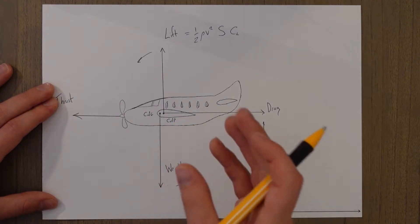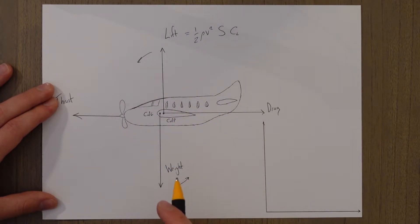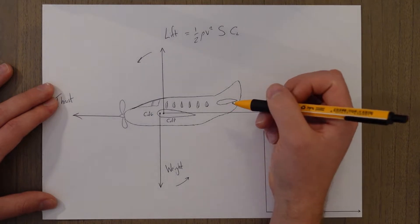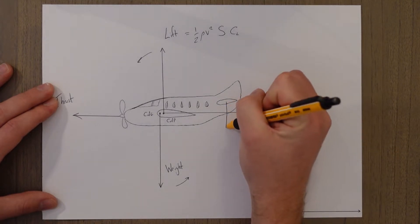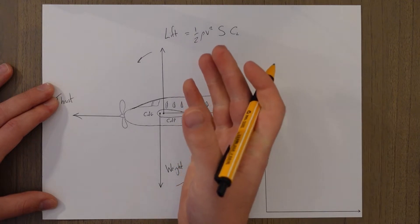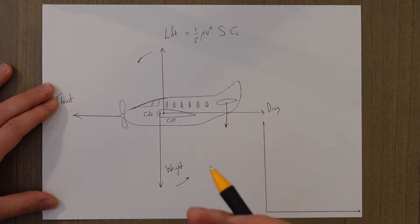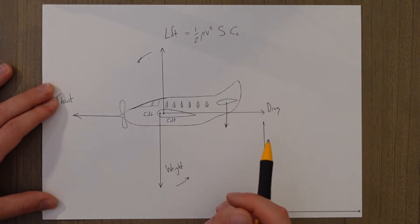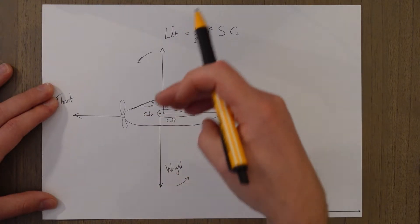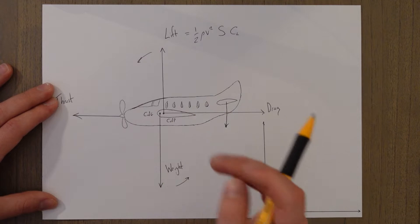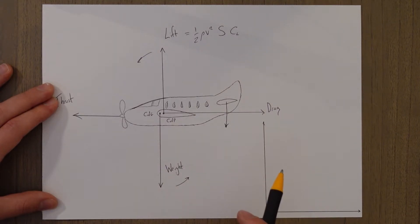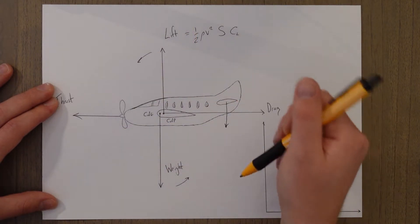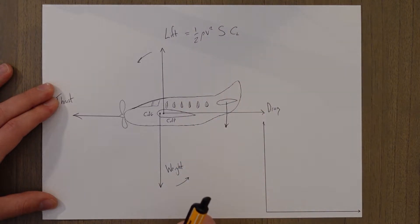We get around this problem of the nose-down pitching moment by using the tail of the aircraft to generate downforce. We do that in the same way as we generate lift but we just invert that — basically like an F1 car. It pushes the back of the aircraft down, and this stops the nose-down pitching moment by creating a nose-up moment.